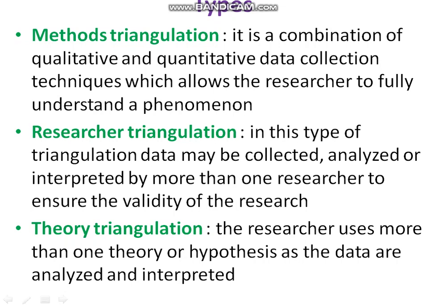The next type of triangulation is methods triangulation. In methods triangulation, it is a combination of qualitative and quantitative data collection techniques, which allows researchers to fully understand a phenomenon and enhance the authenticity of data collection.